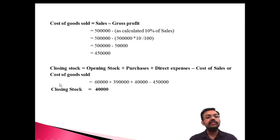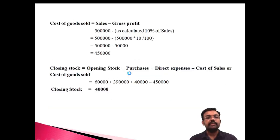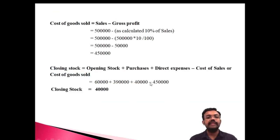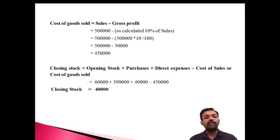Closing Stock = Opening Stock + Purchases + Direct Expenses − Cost of Goods Sold = 60,000 + 3,90,000 + 40,000 − 4,50,000 = 4,90,000 − 4,50,000 = 40,000. So the closing stock is ₹40,000.